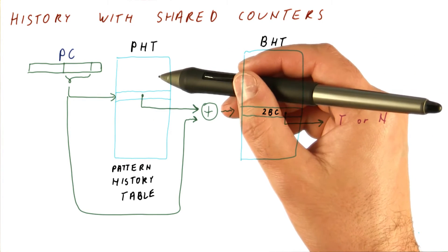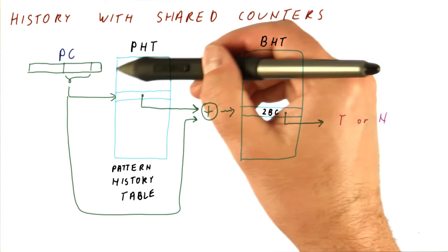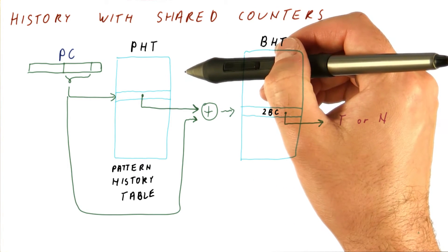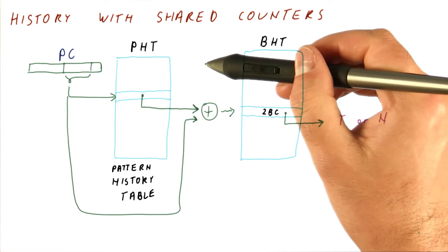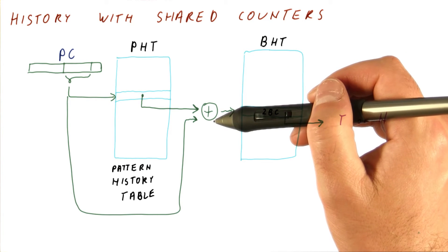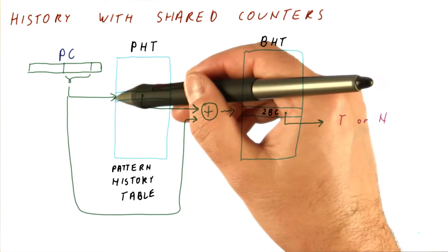Note that it is possible for another PC to map somewhere here. But that history, when XORed with that PC, gives us maybe the same two-bit counters. So it is possible to have some overlap here. But the idea is that this way, for each PC, we have a single history.